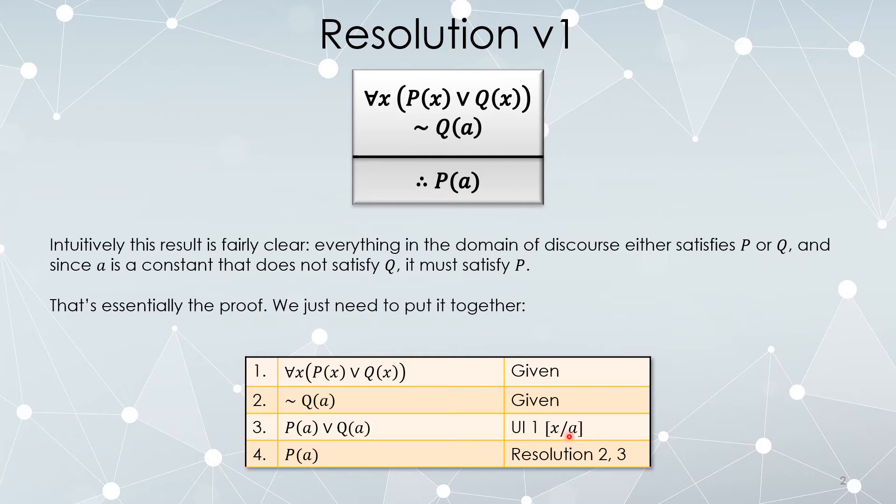We replace every instance of x with A, and since this is a universal instantiation, we don't have to be particularly careful about which variable we use. And now that we have P of A or Q of A, and one of our other givens was not Q of A, we simply apply good old-fashioned resolution to get line 4, and we're done.